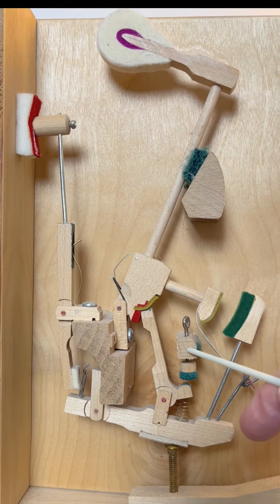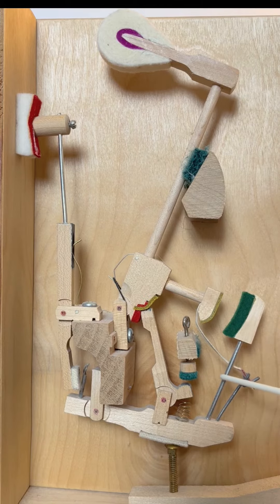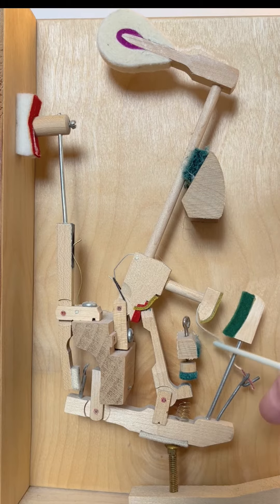This is the let off rail. This is the let off button. This is the back check, back check wire, bridle wire, and bridle strap.